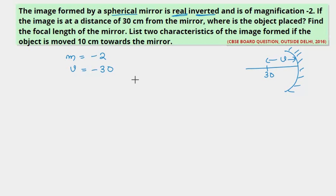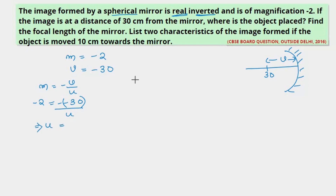Using the magnification formula, we'll find the object distance. Magnification = minus v by u, so minus 2 = minus of (minus 30) by u, which gives u = minus 15 cm. So our object is placed at a distance of 15 cm from the mirror.